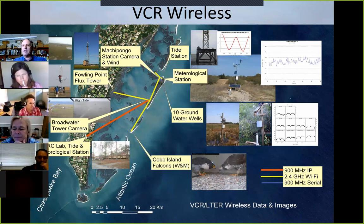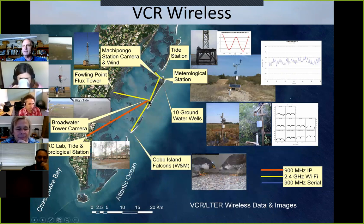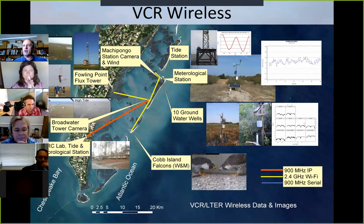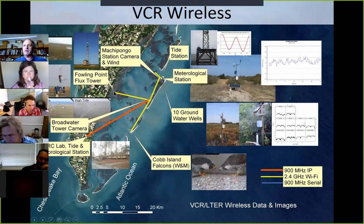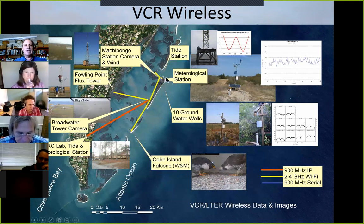We have a 22 kilometer long wireless network — this red line here is 22 kilometers out to the barrier island where it sits on top of a tower. From there it goes to the north end of Hog Island, to our flux tower, and to all of our groundwater wells, meteorological stations, and tide stations on the north end of Hog.